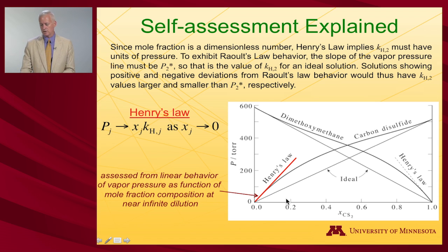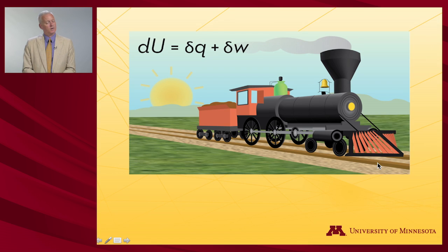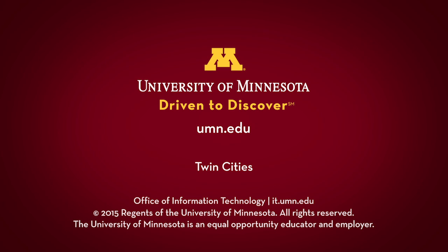Because Raoult's law at one end requires Henry's law at the other, this is true for both components, and you end up with diagrams that consistently show either positive or negative deviation throughout. That takes us through the key concepts of non-ideal solutions. Next time, we're going to look at some interesting phenomena: azeotropes and immiscible phases.